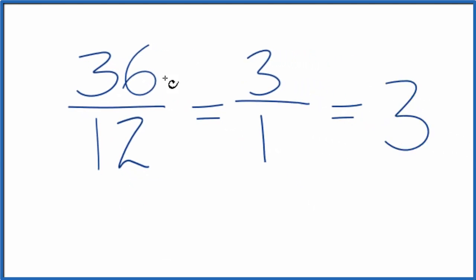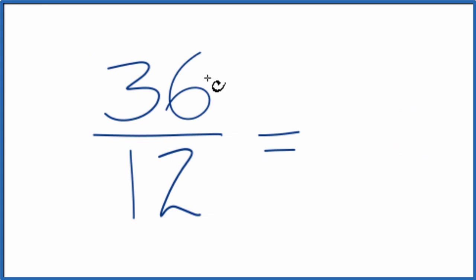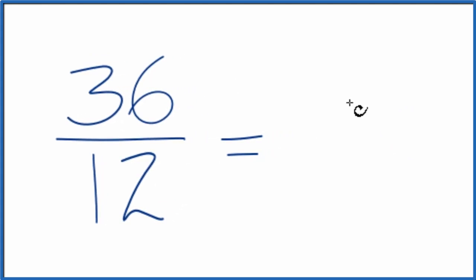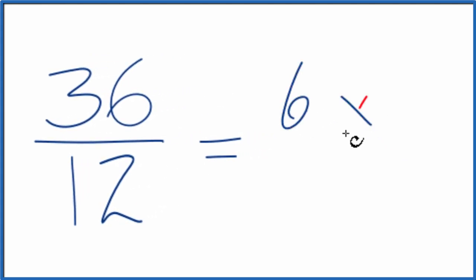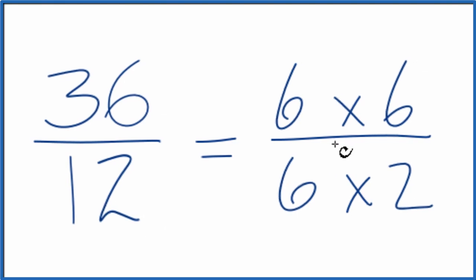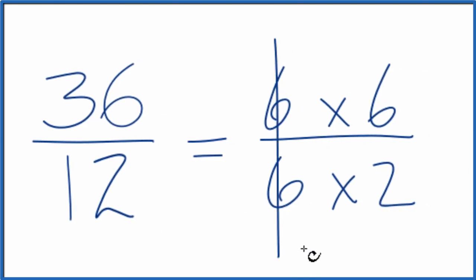You could simplify 36/12 down to 3. Another way to do it: if you know that 6 goes evenly into 36 and 12, you could say 6 times 6 gives us 36, and 6 times 2 gives us 12. So we can cross the 6 out.